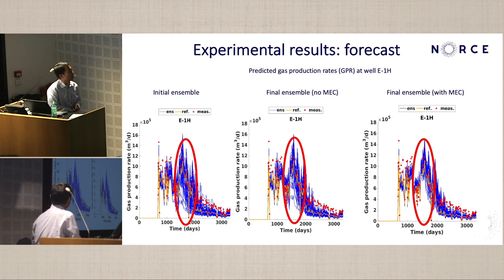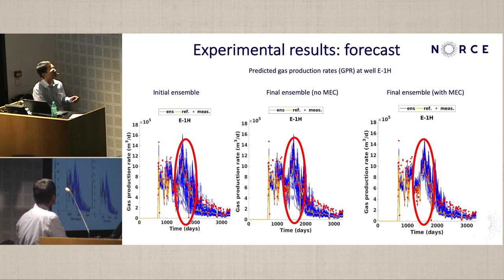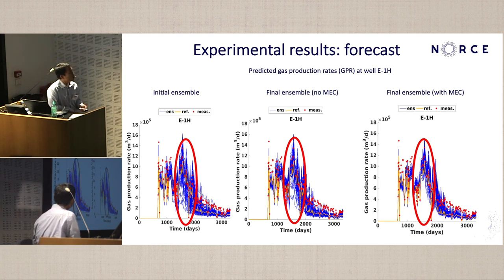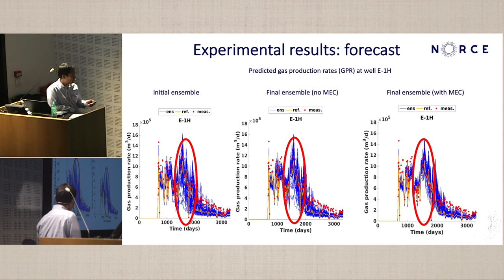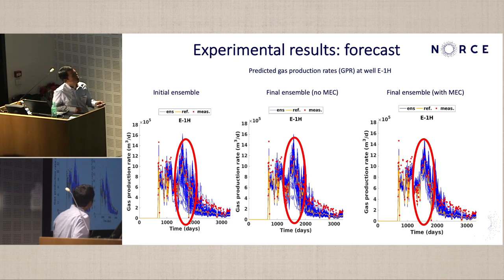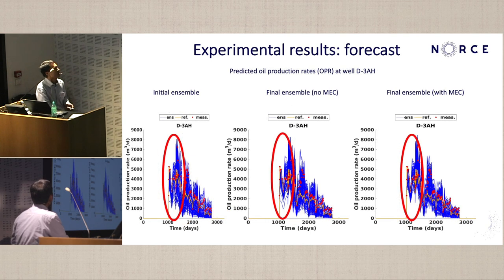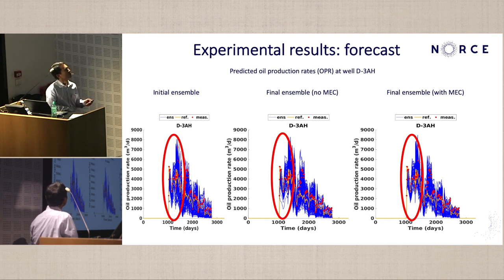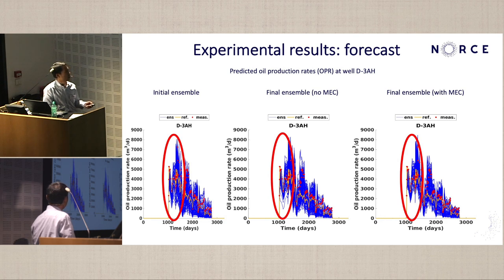I also show forecast production data from other wells. For the gas production rate from one well, comparing the case without model error correction to the case with correction, we see improvement over certain time intervals where the blue curve matches the red observed data better, with fewer outliers. For the oil production rate from another well, we also see improvement: outliers in the forecast move closer to the real observed data when model errors are taken into account.